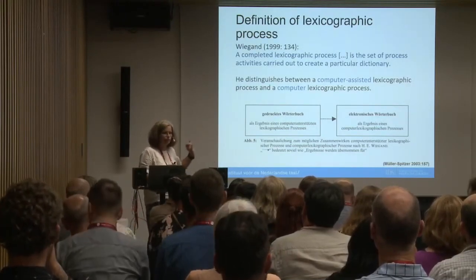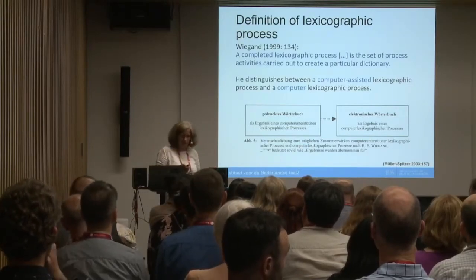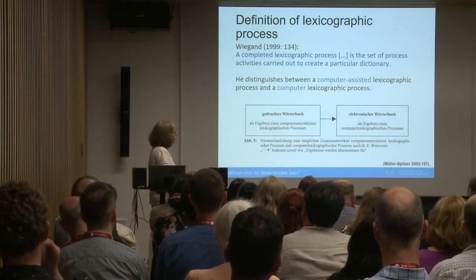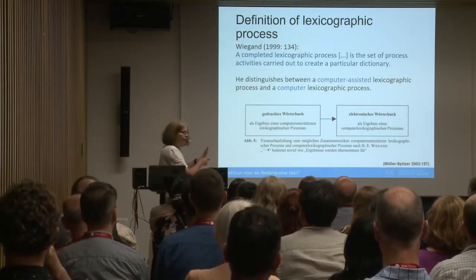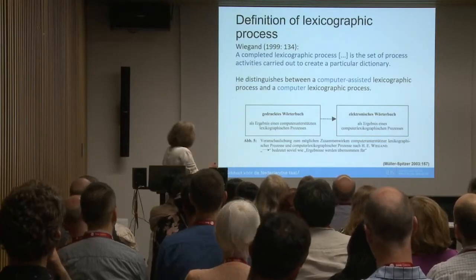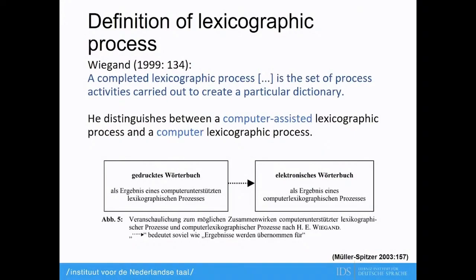In these, he distinguishes between a computer-assisted lexicographic process and a computer lexicographic process. The computer-assisted lexicographic process always results in a printed dictionary. And then for the electronic process, the computer lexicographic process always results in an electronic dictionary. This electronic dictionary can be a CD-ROM, something on your PC, an online dictionary, but also a resource for language technology use. But importantly, for Wiegand, the output — a resource for language technology — is not part of the lexicographic process; that was supposed to be studied in a different field.